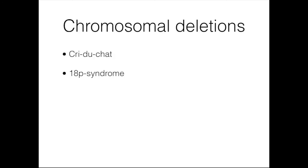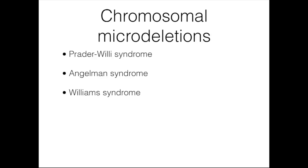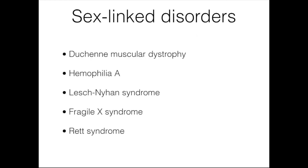A couple of chromosomal deletions discussed in the textbook are Cri du Chat syndrome and 18p syndrome. Chromosomal microdeletions that are commonly seen include Prader-Willi syndrome, Angelman syndrome, and Williams syndrome. Sex-linked disorders commonly seen include Duchenne muscular dystrophy, hemophilia A, Lesch-Nyhan syndrome, Fragile X syndrome, and Rett syndrome — all of which can be either recessive or dominant. More details on all of these are provided in your textbook.